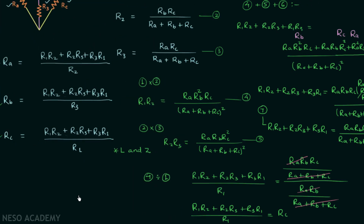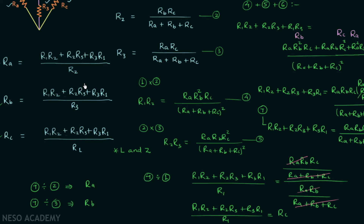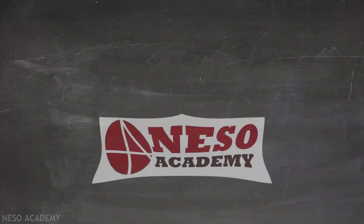When you divide equation number 7 by equation number 2, you get ra. When you divide equation number 7 by equation number 3, you get rb. In this way we can derive all three results. As in the previous lecture, the derivation is less important than the result itself — so remember these formulas as we will use them in the coming lectures.